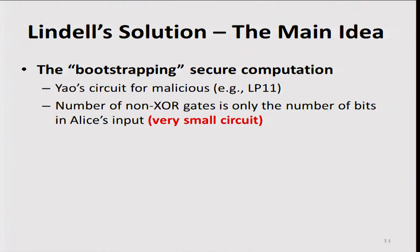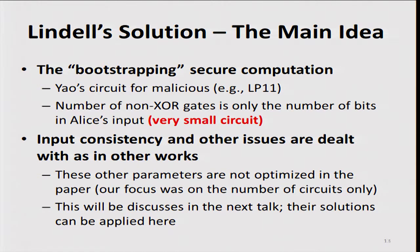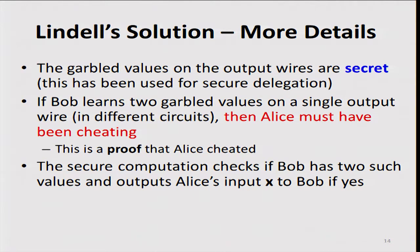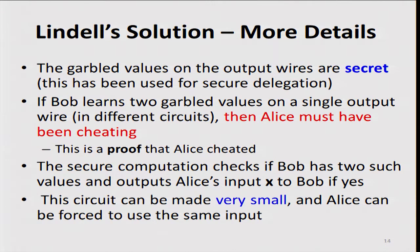We use a protocol from 2011, our previous protocol using 125 circuits, but the circuit is tiny. The number of non-XOR gates, which are the only thing we pay for, is just equal to the number of bits in Alice's input. All the input consistency and other issues — making sure Alice uses her correct input in this computation — are dealt with just like in other works. The next talk by Payman will show really efficient techniques for doing this, and all of his techniques carry over into our work. I didn't try to optimize all the other parameters, because I wanted the focus to be very clear on the number of circuits. The paper shows exactly how to do this computation, and I encourage you to read it.